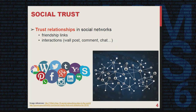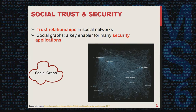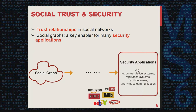Nowadays, online social networks such as Facebook or Twitter are driving new forms of social interactions. Users of social media friend each other, follow others' tweets, leave comments, and post updates. In this way, social trust relationships are established. This kind of trust relationship can be presented by social graphs and has been widely leveraged by a range of security applications, such as recommendation systems, reputation systems, and also Sybil defense mechanisms.